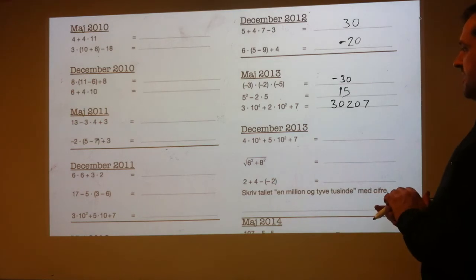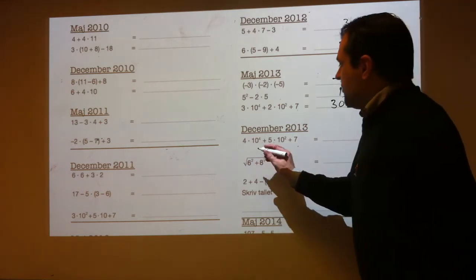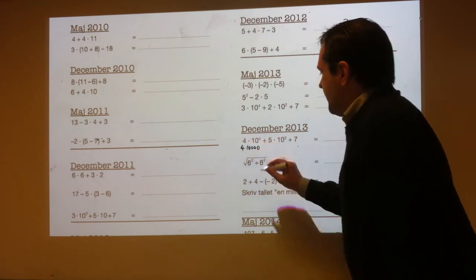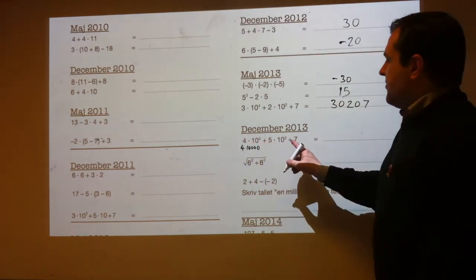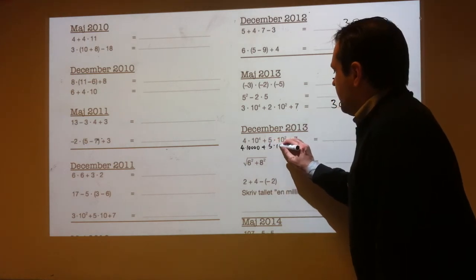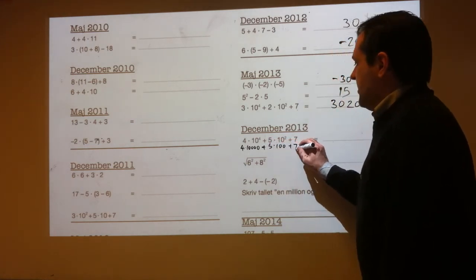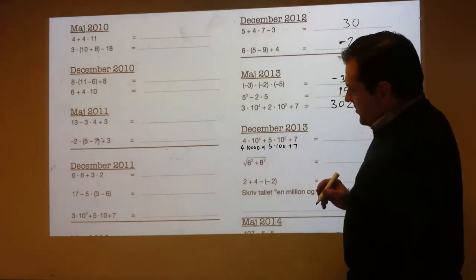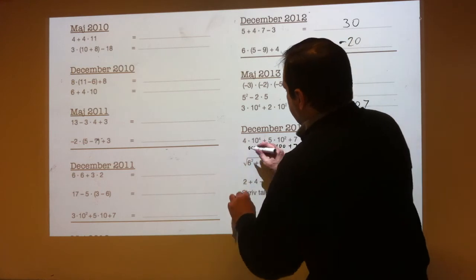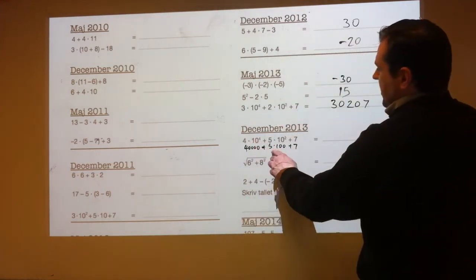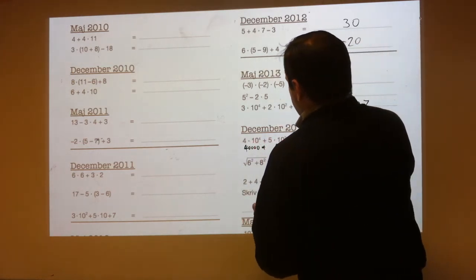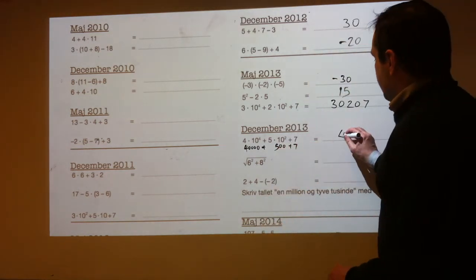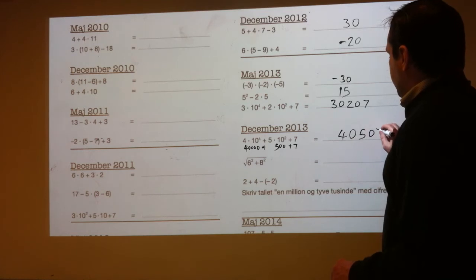Here's another one like it. 4 times 10 to the 4 is the same as 4 times 10,000. 5 times 10 squared is the same as 5 times 100, plus 7. So 4 times 10,000 is 40,000, and 5 times 100 is 500. So it's 40,000 plus 500 plus 7, which is 40,507.